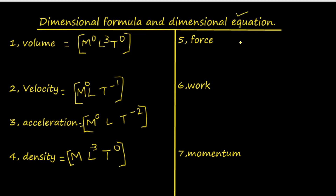Now for dimensional equation: take the example of force. The symbol F is written on the left-hand side within square brackets, and the dimensional formula for force is written on the right-hand side. Force equals mass × acceleration, and acceleration is M raised to 0, L, T raised to −2. Adding mass gives the dimensional formula M, L, T raised to −2.